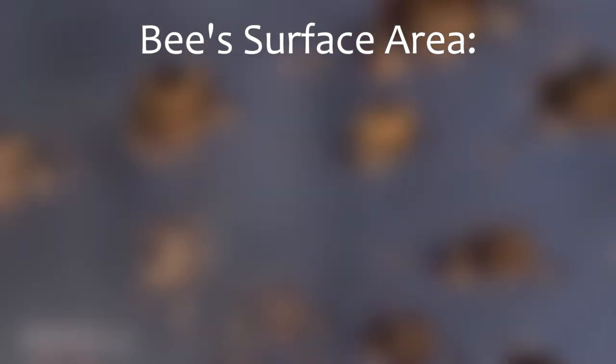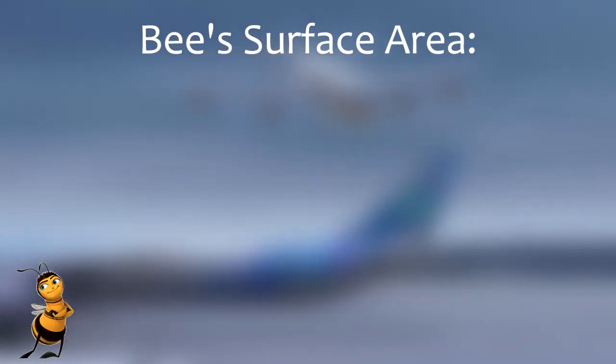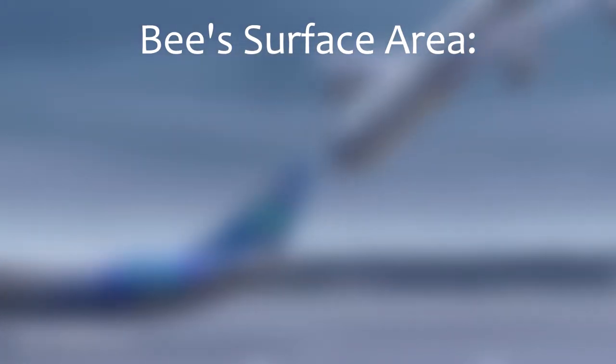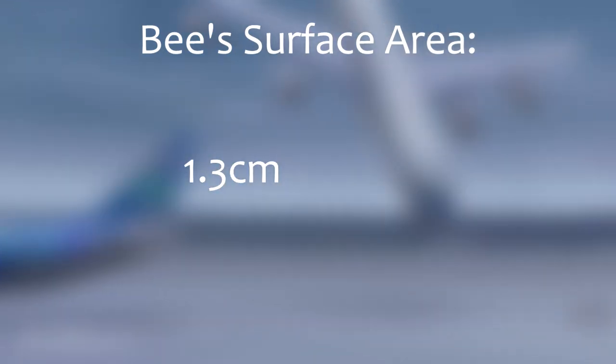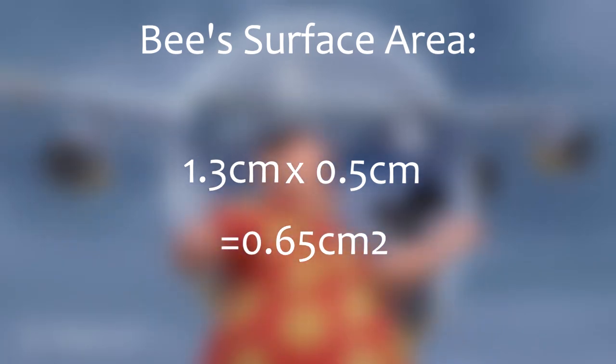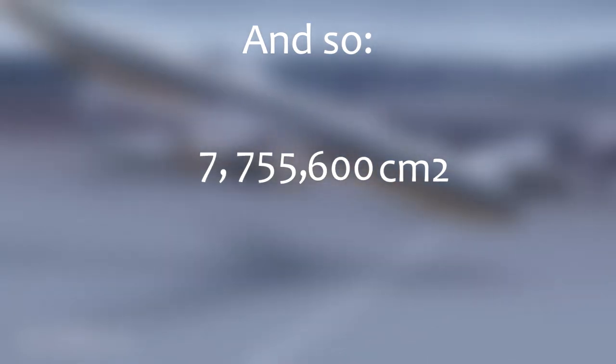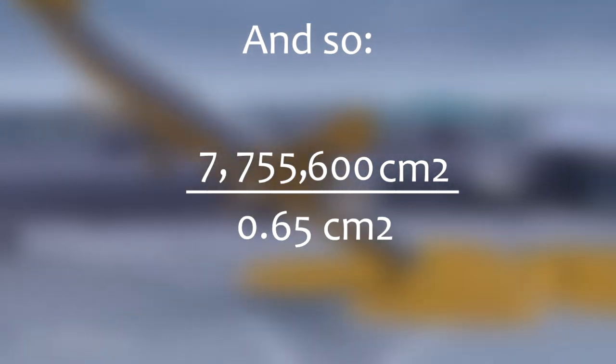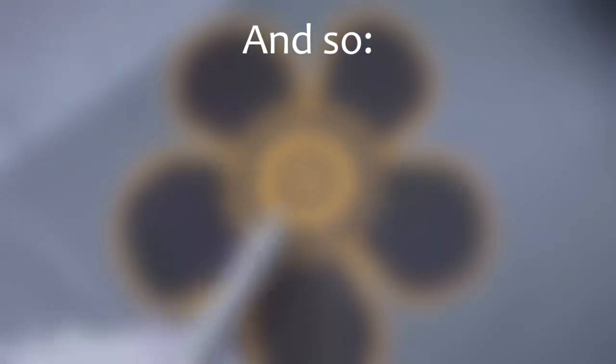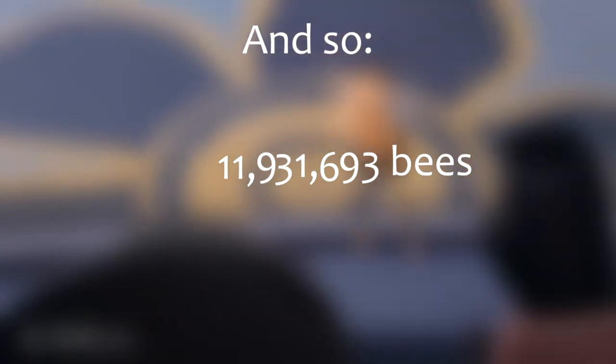Now we need the surface area a bee takes up. I'm also just going to assume that a bee is a very small rectangle here, and so we will just multiply the dimensions from earlier. 1.3 times 0.5 equals 0.65 centimeters squared. And so we take the 7,755,600 centimeters squared, and we divide it by 0.65 centimeters squared. We get 11,931,693 bees under the plane.